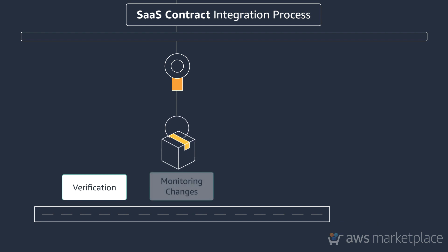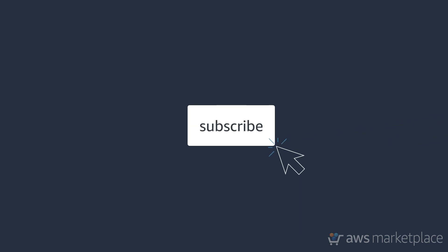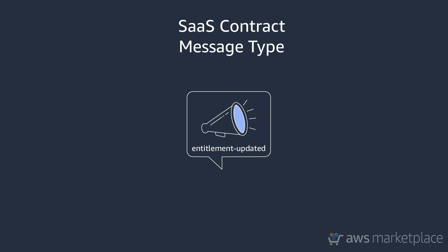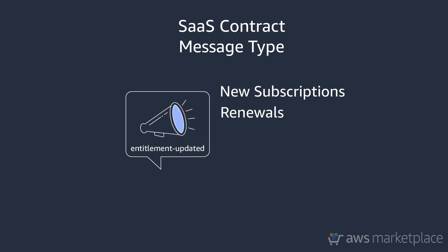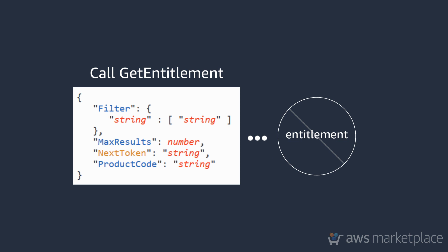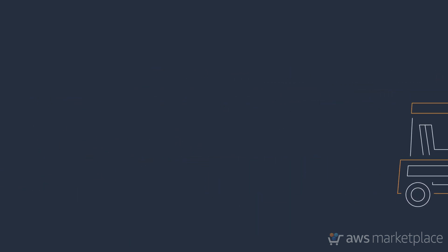Next, we focus on monitoring SaaS contract subscription changes. Similar to SaaS subscription, you will need to subscribe to the product's SNS topic. Once set up, you can expect to receive only one message type: Entitlement Updated. This message is published any time there is a change to the customer's subscription. Scenarios include new subscriptions, renewals, upgrades, and expirations. After receiving this message, you will need to call GET Entitlement to obtain the customer's current entitlement. If no entitlement is returned, it indicates a customer's subscription is no longer active. At this point, you will need to determine how best to handle the customer experience and deactivation of services. The most likely scenario in this event is that a customer's contract did not renew. Customers cannot cancel a contract after 48 hours.